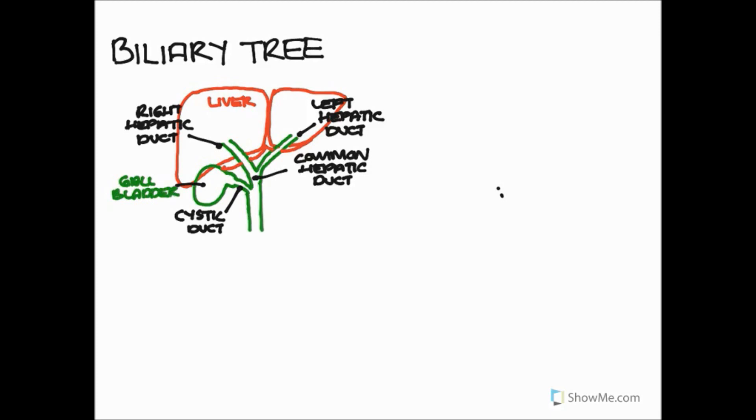When the gallbladder is stimulated by a substance called cholecystokinin or CCK, this causes the gallbladder to contract. It's basically like a blunt-ended sac, so the bile is squirted out through the cystic duct and into the tube which connects the common hepatic duct and the cystic duct, and this is called the common bile duct.